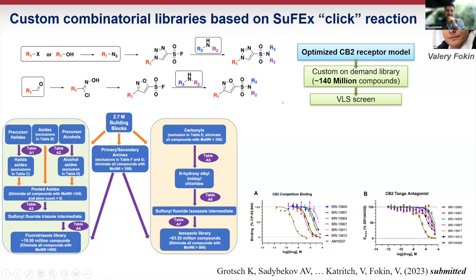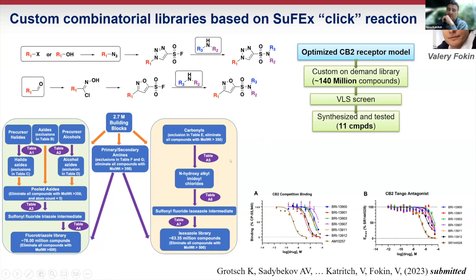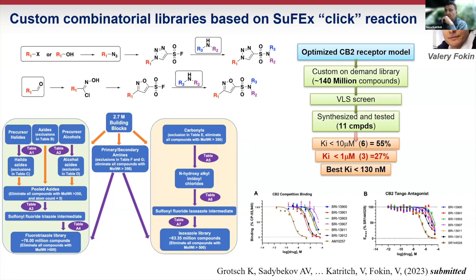In terms of diversity, apart from working with Enamine and ChemSpace, we also partnered with Valery Fokin at USC — an expert who barely missed the Nobel Prize on click chemistry. They developed a new generation of click reactions, the SUFAX reaction. We built a library of purchasable building blocks compatible with these two reactions based on triazole and oxazole, and screened about 140 million compounds at cannabinoid receptors. We synthesized 11 compounds and six were hits, with three sub-micromolar hits — results comparable to the VSynthes screen.